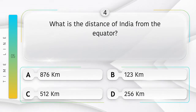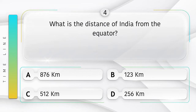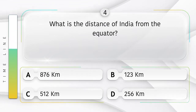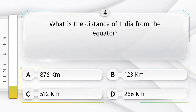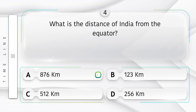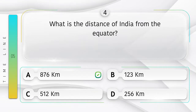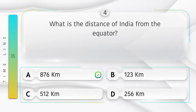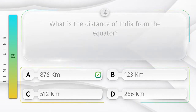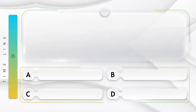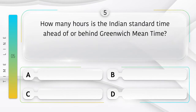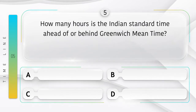What is the distance of India from the equator? Option A: 876 kilometers, B: 123 kilometers, C: 512 kilometers, D: 256 kilometers. Answer is option A: 876 kilometers.